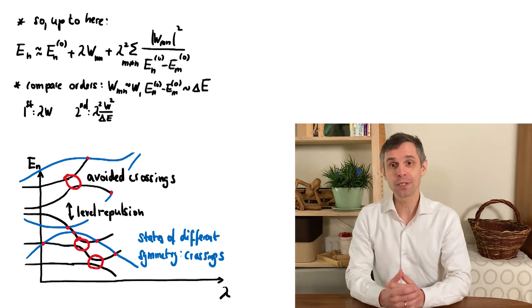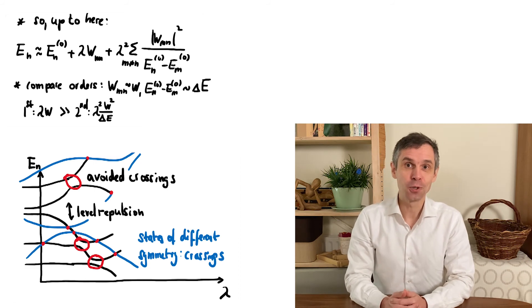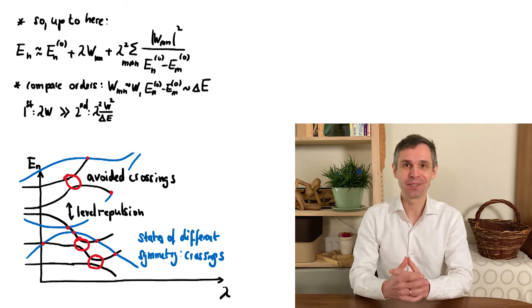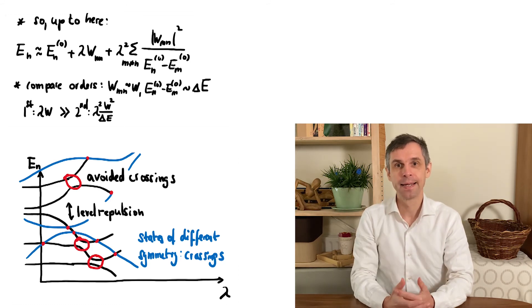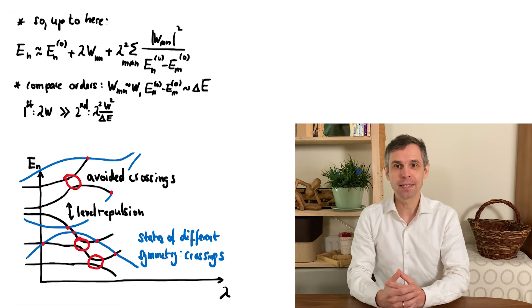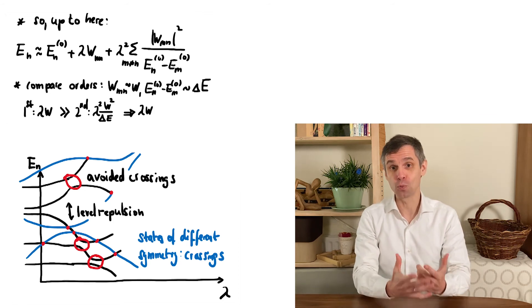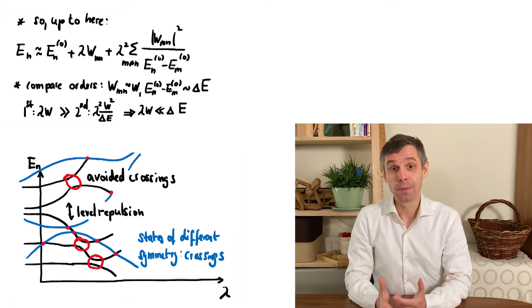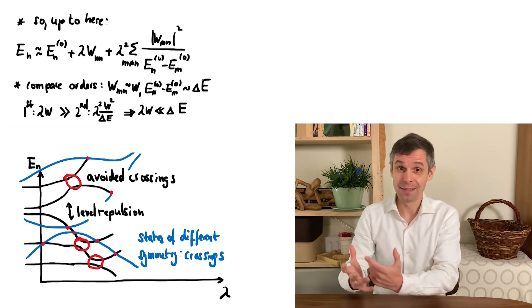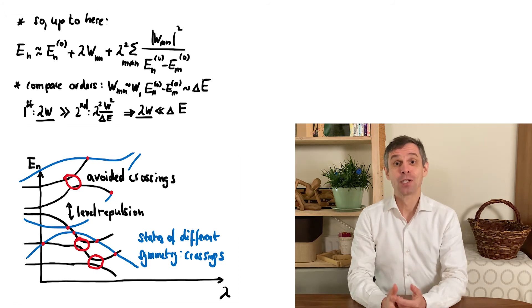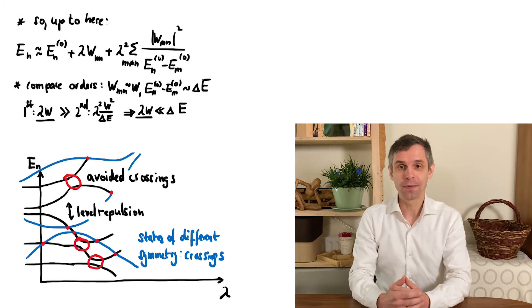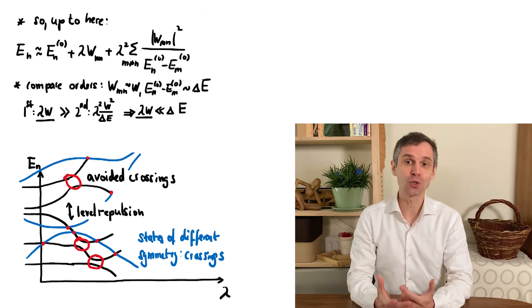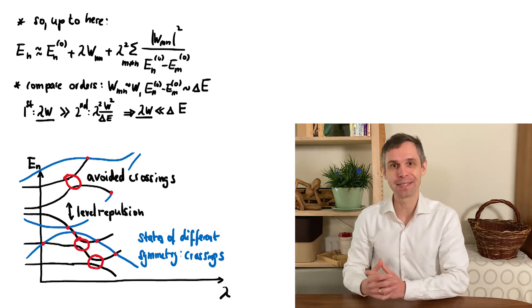Now our approximation has a good chance to be accurate if this condition given here holds true. The second-order correction is then generally much smaller than the first-order correction. And if you rearrange this, then you find that this perturbation itself should be smaller than this typical energy spacing. But the perturbation just gives you the typical size of the leading correction to the energy levels. So as a general rule, this version of perturbation theory gives good approximations when the corrections to the energies are smaller than their typical original spacing.